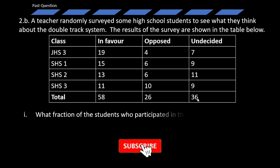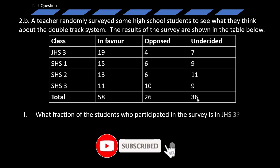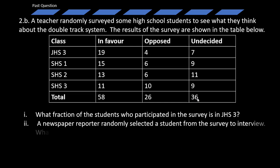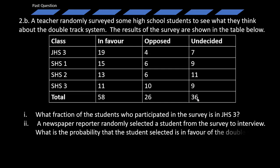Question I: What fraction of the students who participated in the survey is in GHS3? Question II: A newspaper reporter randomly selected a student from the survey to interview. What is the probability that the student selected is in favor of the double track system?